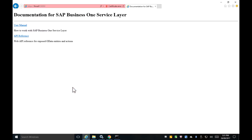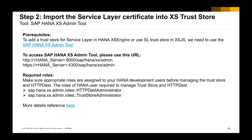Next, Step 2: we are going to import the certificate of the Service Layer into the XS trust store. We will use the HANA XS Admin Tool — the administration tool for the XS engine. This tool allows you to manage the trust store and security settings. For further information, a URL is provided. To use this tool, you will require at least two roles: the Trust Store Administrator role and the HTTP Destination Administrator role.